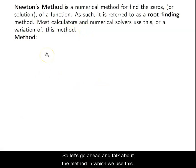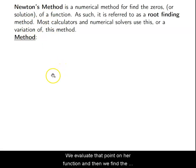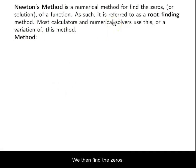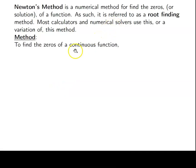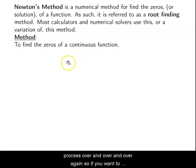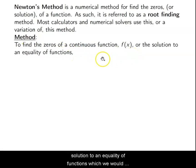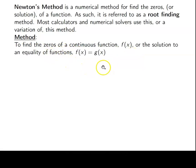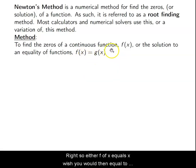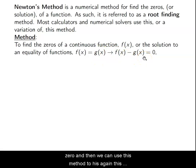Let's talk about how we use this method. We pick a point, evaluate that point on our function, and then we find the tangent line at that point. We then find the zero of that tangent line, and then we use that zero to start the process all over again. It's an iterative method — you do the same process over and over again. We're finding zeros of a continuous function, or the solution to an equality of functions, which we would set equal to zero, because this is a root-finding method.